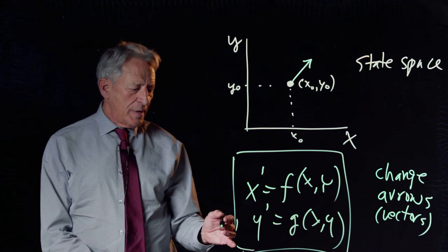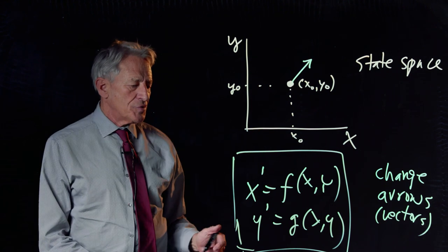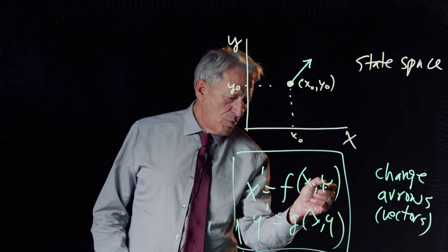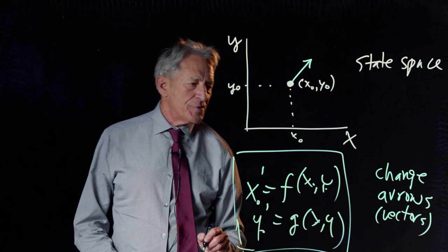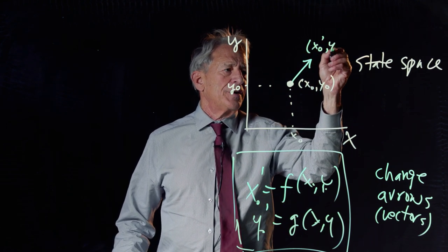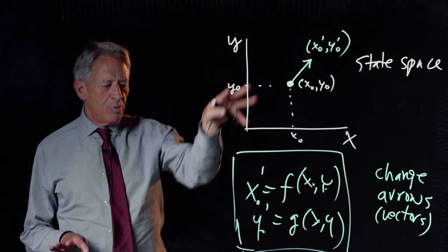we're using as a recipe to set up the change arrows. So we're at the point X0, Y0, we plug X0, Y0 in, we get X0 prime, Y0 prime, and we draw that as the change vector right here. X0 prime, Y0 prime, that is the change vector at that point.